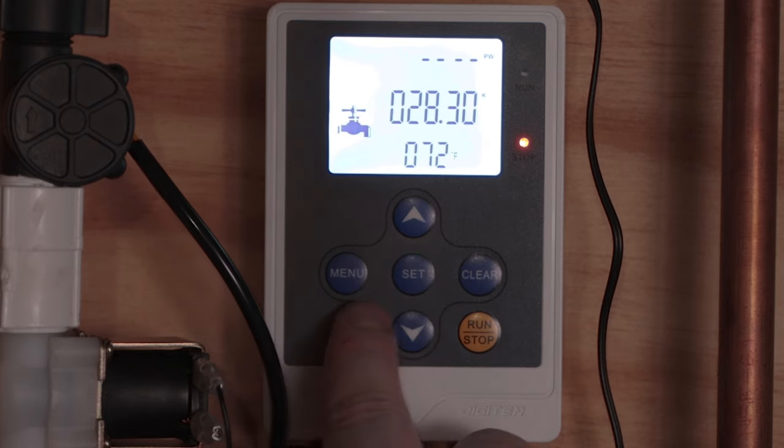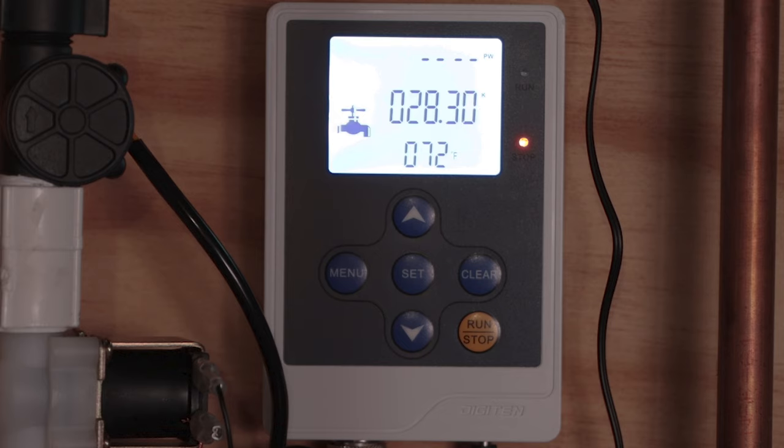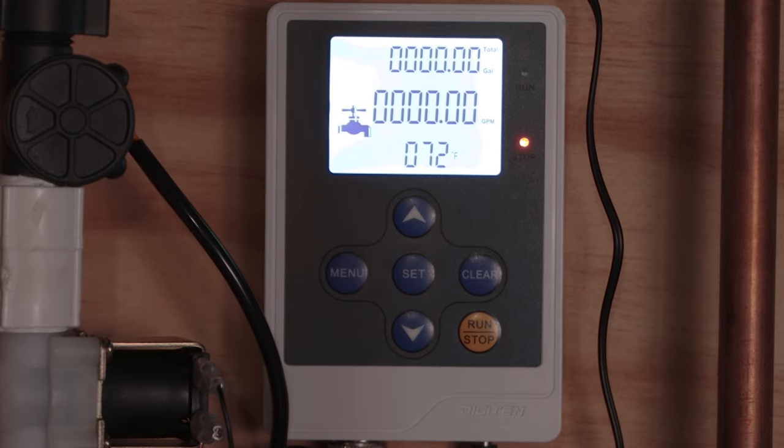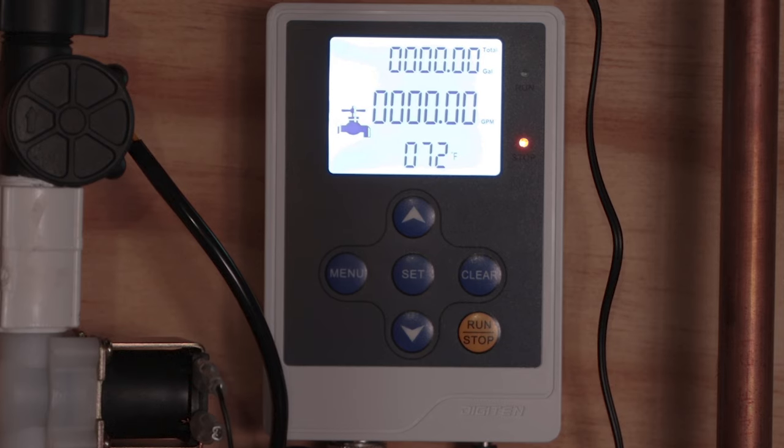But once you get everything set up, you may have to adjust this depending on how your flow is for your faucet. They do make some different sensors that have different fitting attachments, one for like John Guest type fittings that has a more finite or lower measurable amount that it uses. So if you do have one of those, you might want to look at that.